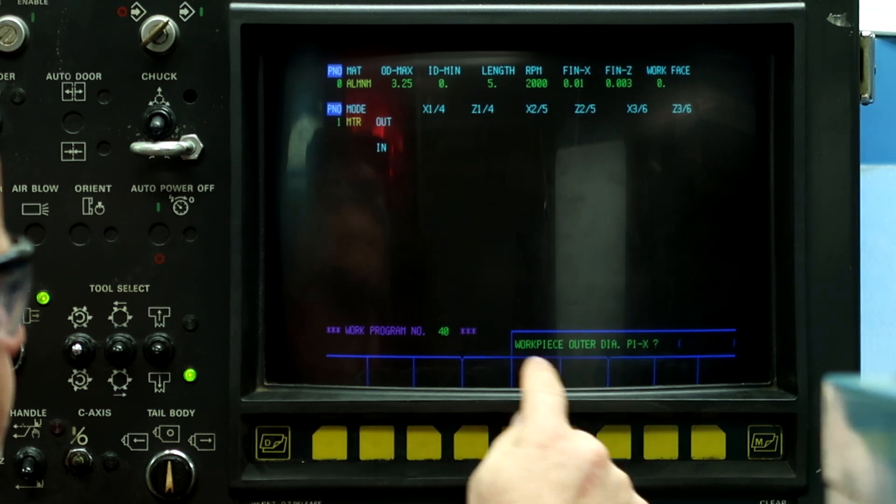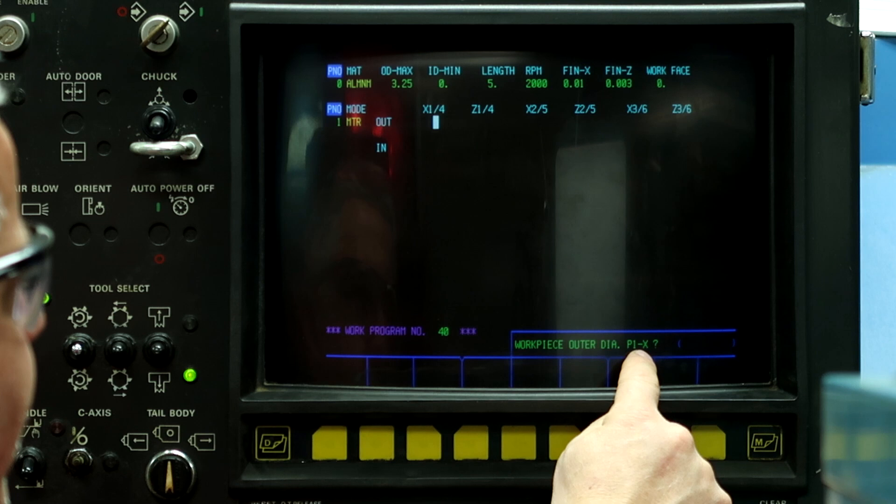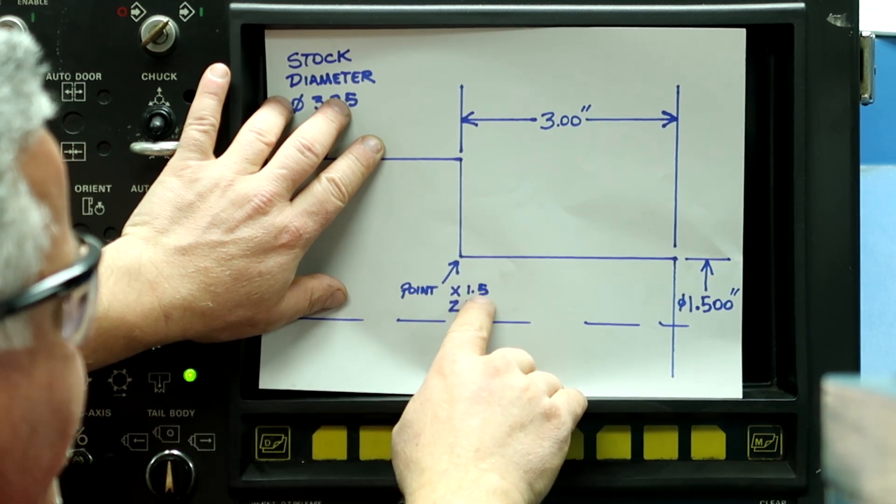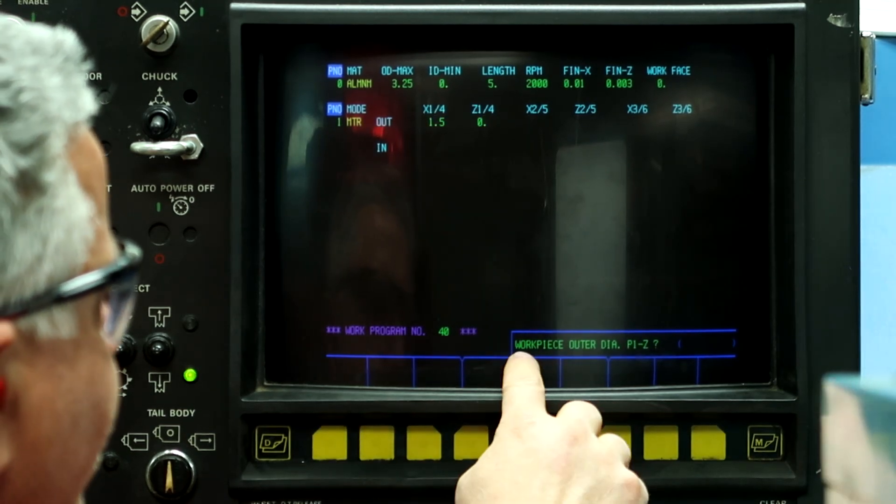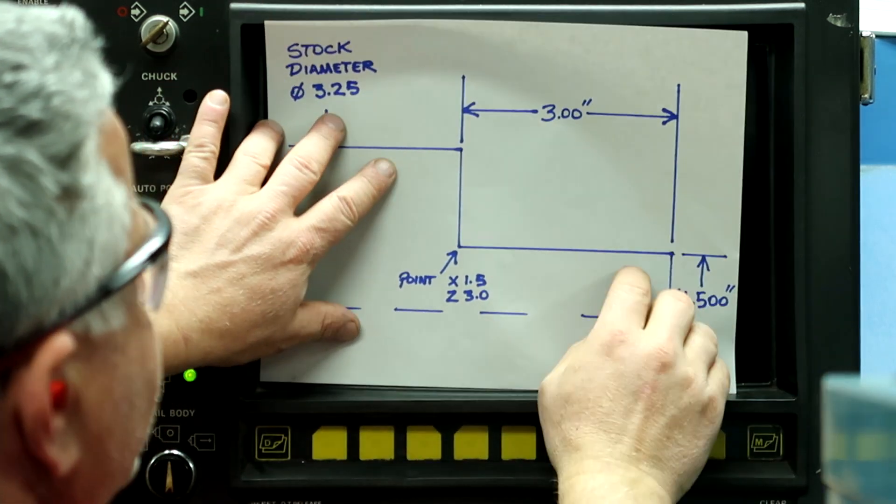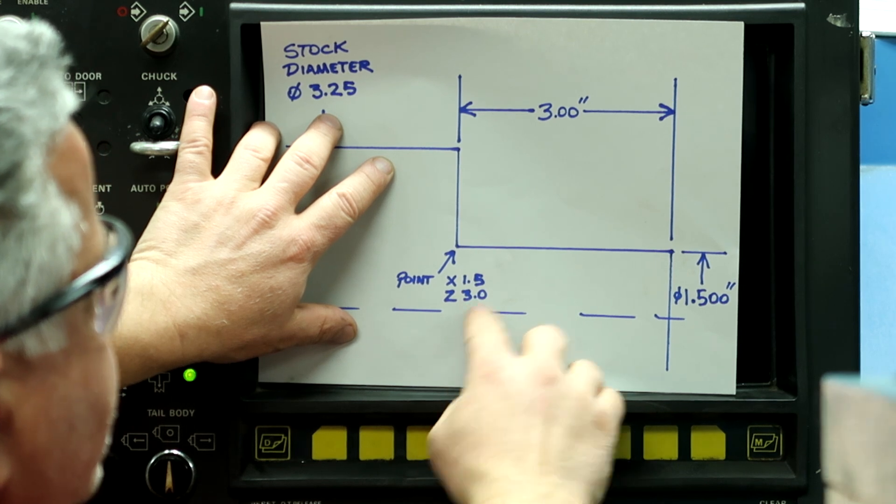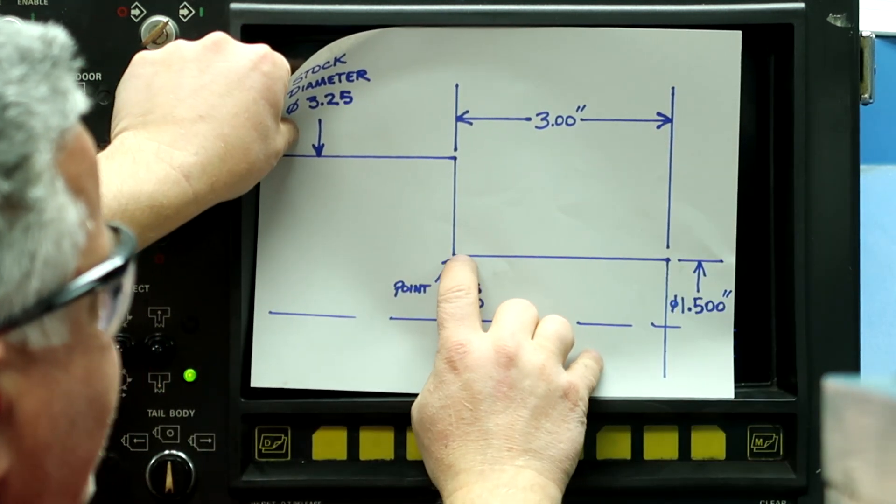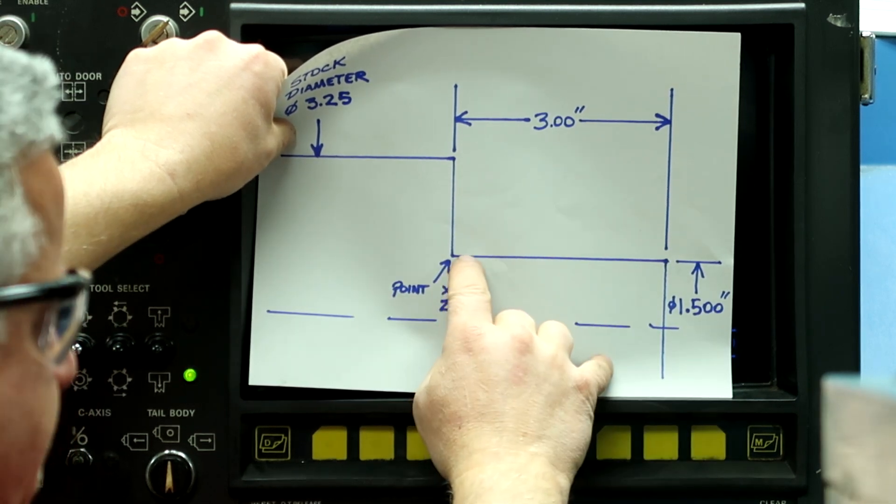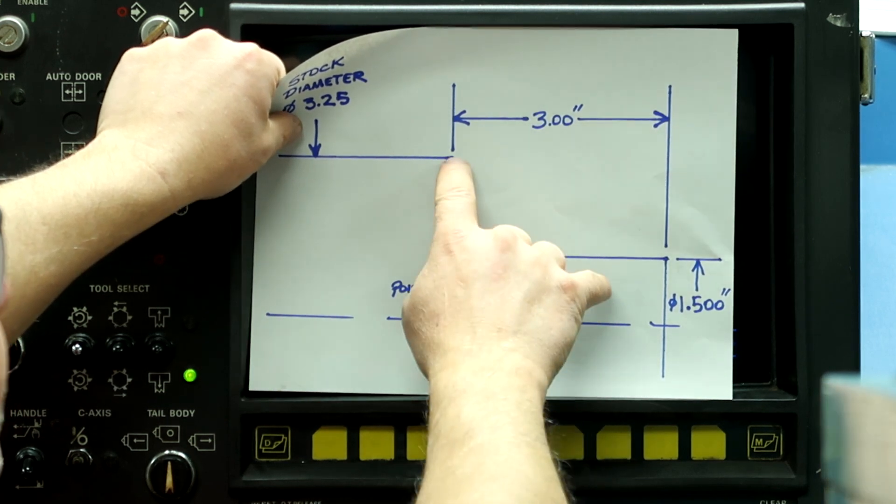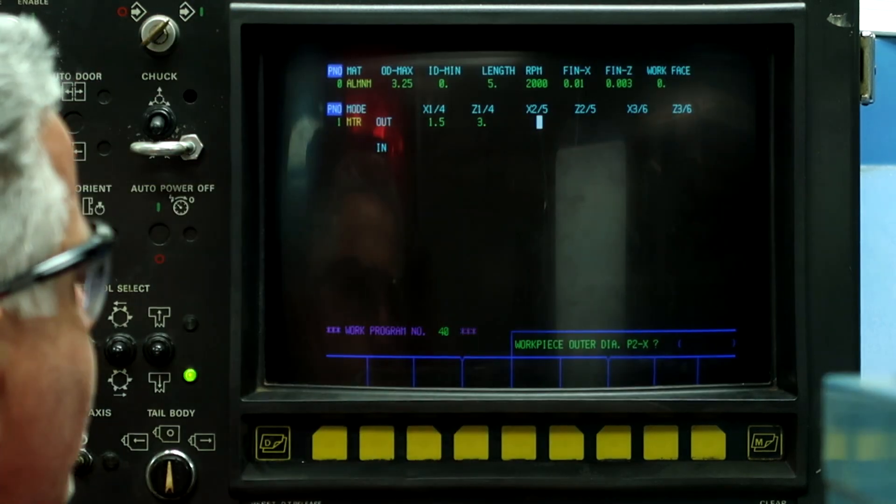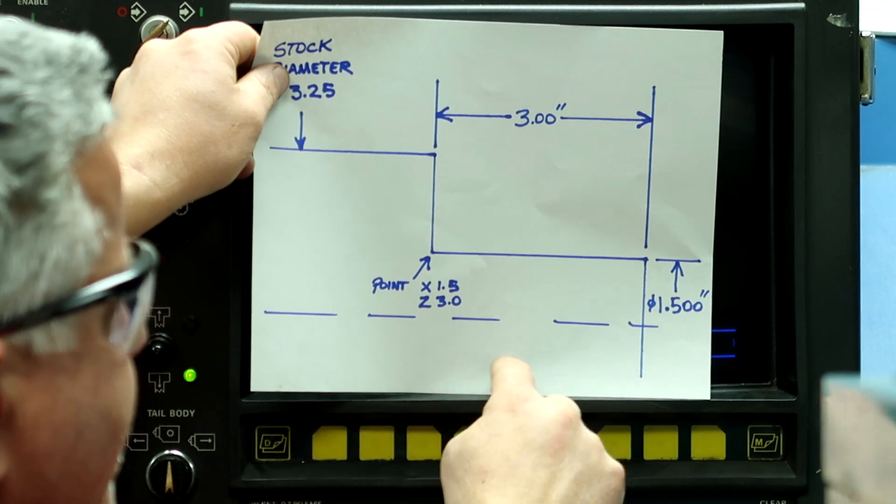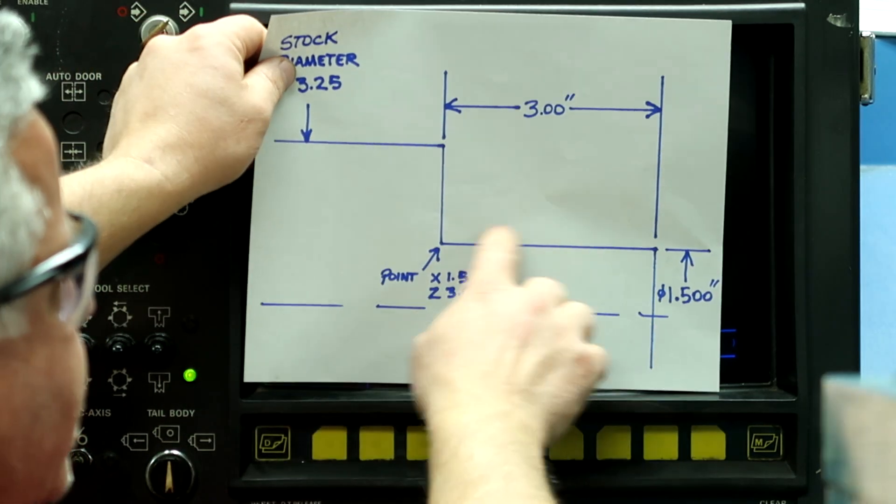So you push work piece shape. Work piece outer diameter 0.1 in X. So we're going to give it this point right here, X is 1.5. Work piece outer diameter 0.1 in Z, and we're going to give it this point here in Z which is 3.0. And for this work piece shape we only need to give it one coordinate right here. It's going to put this horizontal line in here and the vertical line up to the stock diameter.